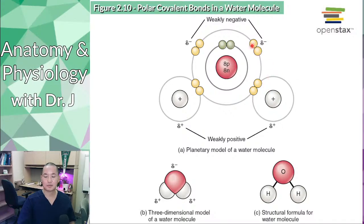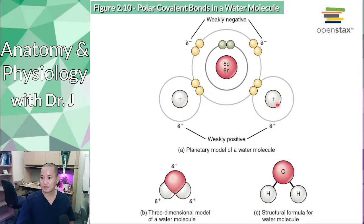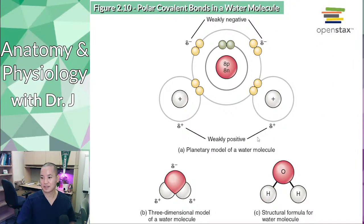Since the electrons — which are negatively charged — spend more time near oxygen, the oxygen is slightly negatively charged. The hydrogen atoms, since they spend less time with that negative electron, have a nucleus that is positive because it has a proton. So if you have a positive charge at the nucleus but the electron spends more time away from it, the positive charge becomes a little more exposed, which is why the hydrogen atoms are slightly positive.